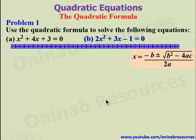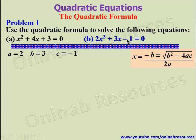Moving to problem 1b: our a is 2 since the coefficient of x squared is 2, our b is 3 since the coefficient of x is 3, and our c is negative 1 since the constant term is negative 1. We substitute a, b, and c into the formula, so x equals negative 3 plus or minus the square root of 3 squared minus 4 times 2 times negative 1, everything over 2 times 2.